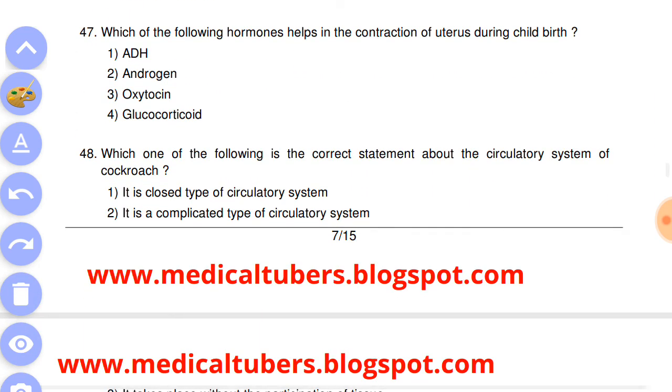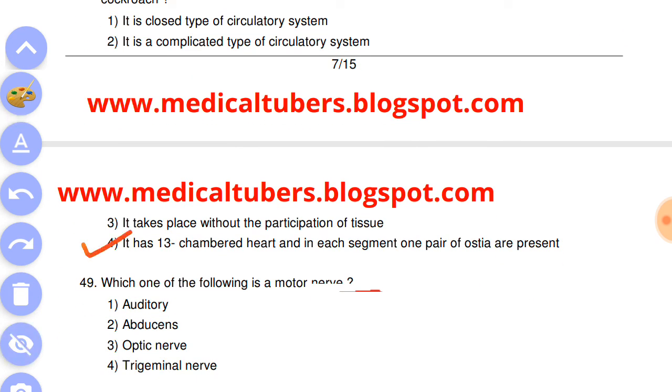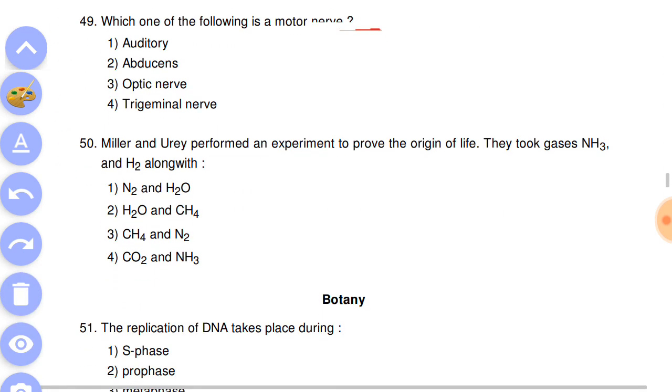Question number 47: which of the following hormones helps in the contraction of uterus during childbirth? Answer is the third, oxytocin. Next question: which of the following is the correct statement about the circulatory system of cockroach? Answer is the fourth, it has 13 chambered heart and in each segment one pair of ostia are present.